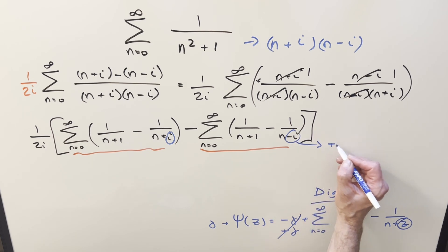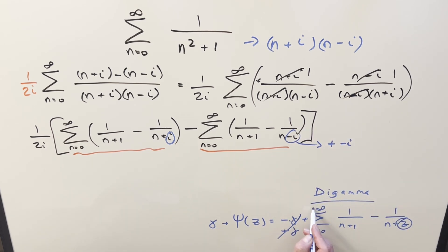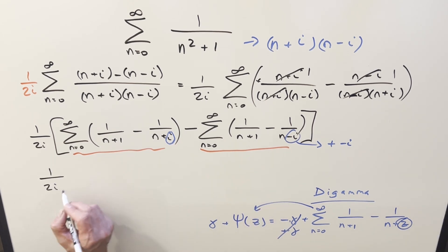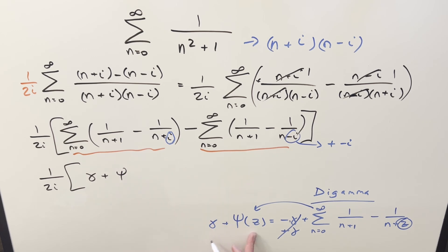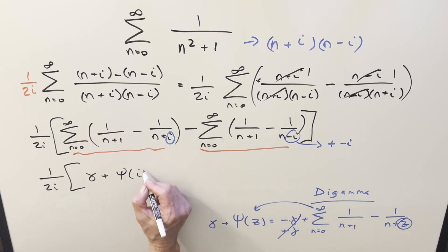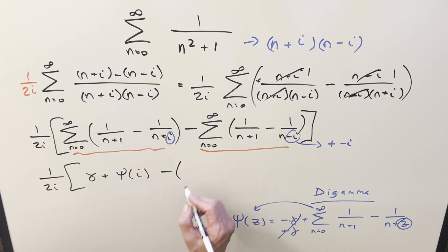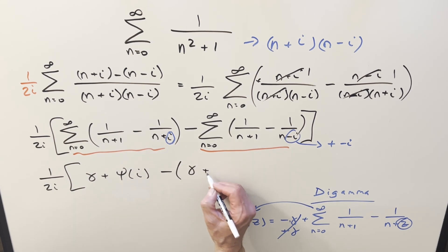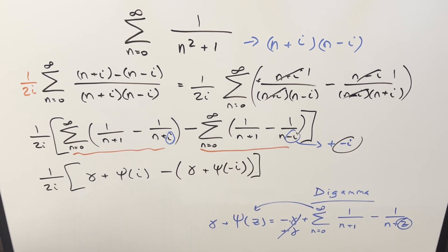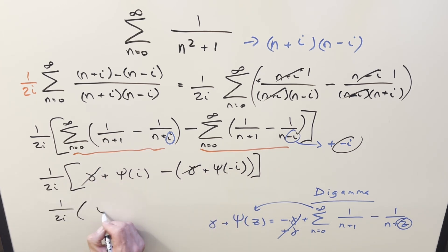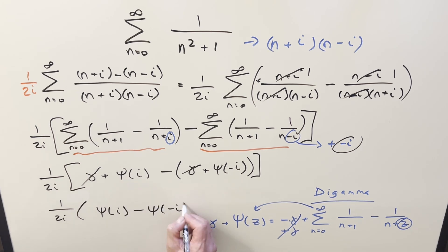We're going to find that with z equal to i and over here with minus i, or you can think of this like plus-minus i. Using this formula in reverse, this is going to reduce to 1 over 2i times: the first sum becomes just Euler–Mascheroni constant plus digamma of i; the second one is Euler–Mascheroni constant plus digamma of minus i. Distributing in the minus sign, the constants cancel out, and this reduces to 1 over 2i times (digamma(i) minus digamma(−i)).